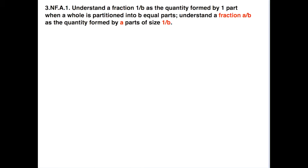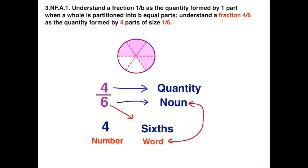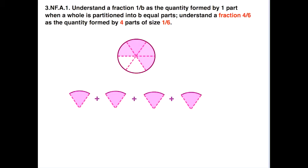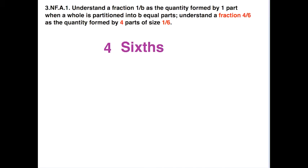Let's look at A over B versus 1 over B using numbers. Working with one-sixth as our size and four parts shaded in, the four is a number — it is a quantity, our numerator. But in the denominator we have a sixth, which we need to interpret as a noun — just a word. Symbolically, here are our four parts: four-sixths, which is no different than four cats, four ponies, or four books.